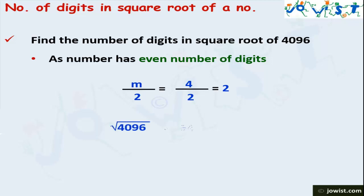What is the square root of 4096? The square root of 4096 is 64, which has 2 digits. This confirms our formula.